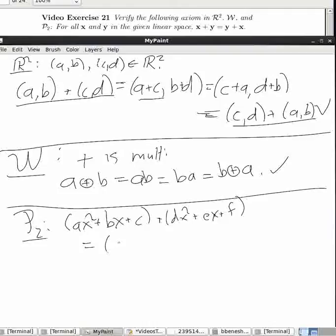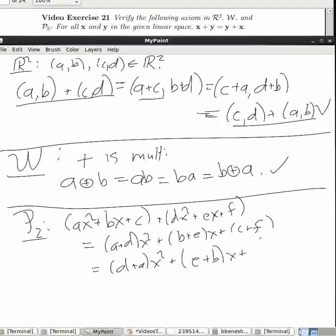I can add them up, and what I get is A plus D X squared. You just put the squared stuff together, put the linear stuff together. Like so. But A plus D is equal to D plus A, because they're real numbers. D plus B X, plus C plus F.